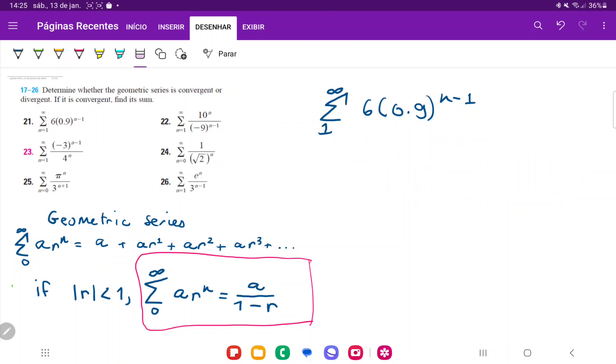It does follow the pattern perfectly, even though the index may seem a little bit weird. So from here, we can see that a is 6 and r is 0.9. Once we have found this, we can now plug it into this formula here.